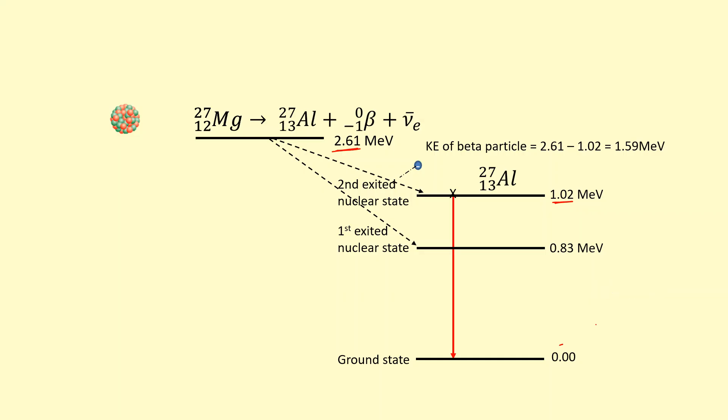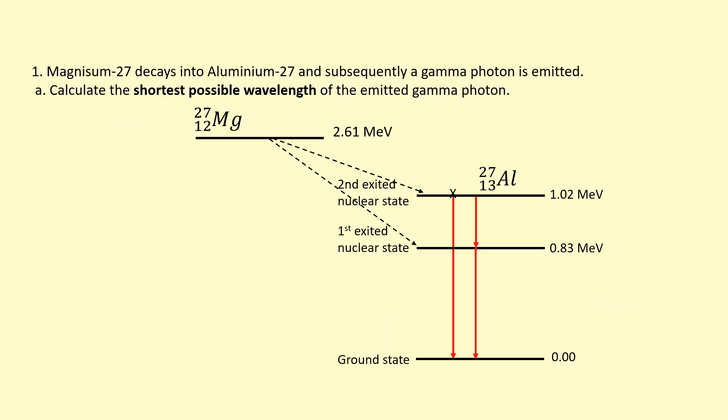And then also once it de-excites, it could de-excite in multiple ways and it can emit gamma photons for each of those transitions there. In this question we're asked to calculate the shortest possible wavelength of the emitted gamma photon from the aluminium-27.